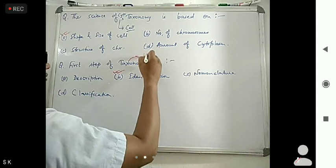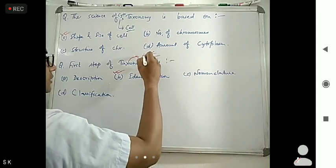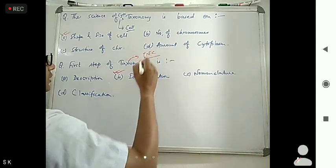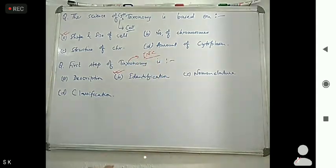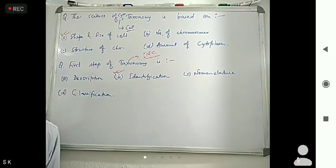You can remember these steps with the short form 'INK': I for identification, N for nomenclature, and C for classification. So the first step is identification.